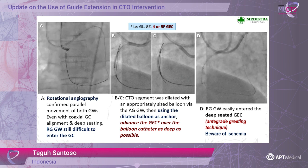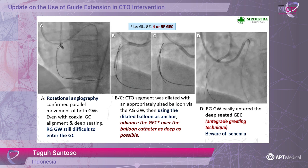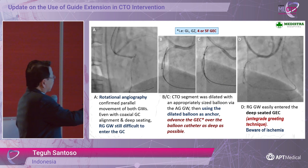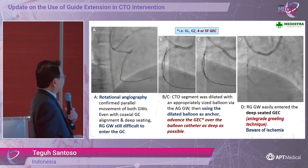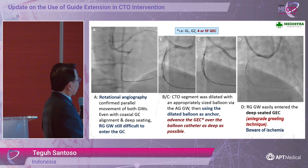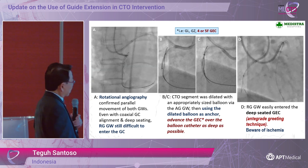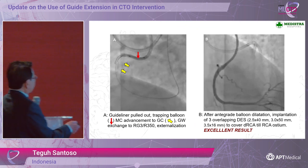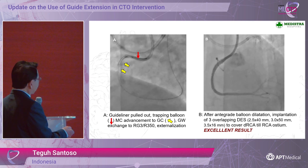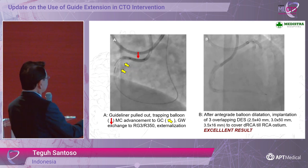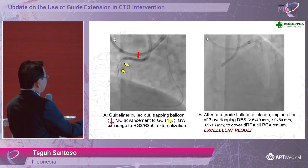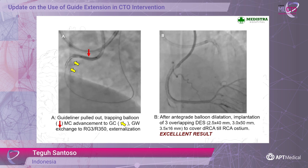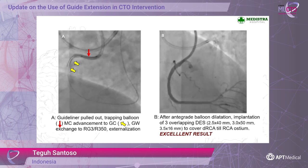We encountered difficulty advancing our wire into the guiding catheter even with coaxial guiding alignment and deep seating. So we proceeded with CTO segment dilatation using an appropriately sized balloon — this is very important. Using the dilated balloon as an anchor, we advanced the guide extension catheter over the balloon catheter as deep as possible. As long as our gear is within the vessel architecture, perforation risk is manageable. After that, the procedure was standard: we advanced the retrograde wire into the guide extension catheter, used the trapping technique, advanced the micro catheter, exchanged the wire, externalized, and completed antegrade stenting with three overlapping DES — very good result.